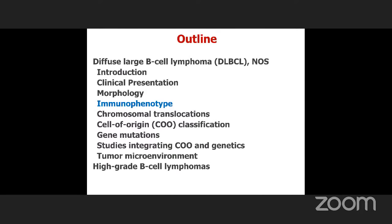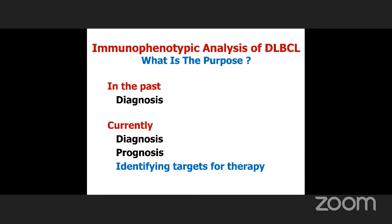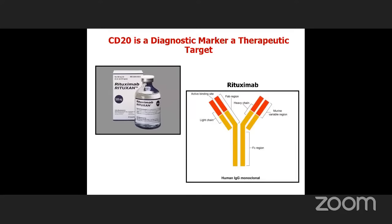Let's move to immunophenotype. In the old days, immunophenotype was mostly for diagnosis. Now diagnosis is still important, but we're using markers for prognosis and to identify targets for therapy. The best example is rituximab — you do PAX-5 to show it's a B-cell tumor, but the clinician wants to know about CD20 because if a variant is CD20 negative, you might not want to use rituximab, which costs about $8,000 a course in the United States.